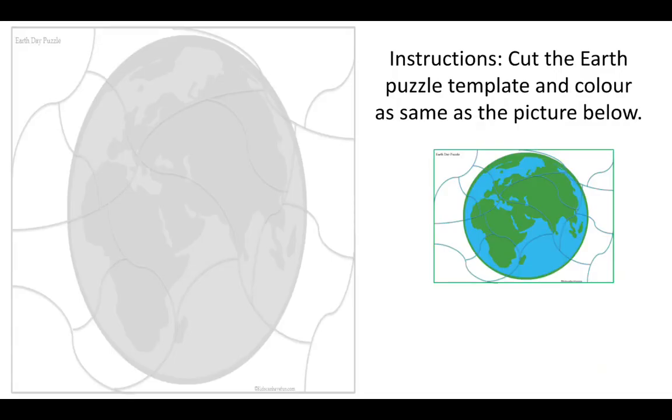And for your craft activity, cut the earth puzzle. Template and color as same as the picture below. Look at this one. Which planet is this? Bravo! This is earth planet. This is our planet. What you're going to do is print this template. On your left side, there is a big uncolored template, right? You will cut it based on the lines and after that one, fix it by yourself. When you already fixed it, look at the small picture planet here and follow the same color as the earth. How many colors did you see? We have only two colors there, right? The green and the blue. So, the puzzle planet template should be the same. The small puzzle template should be the same with the big puzzle template.